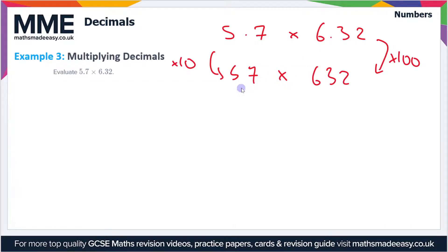So our calculation is 57 times 632. Now we can use any method of long multiplication we want to work this out. I'm going to use the grid method because it's my preferred method, but you can use whichever one suits you better.